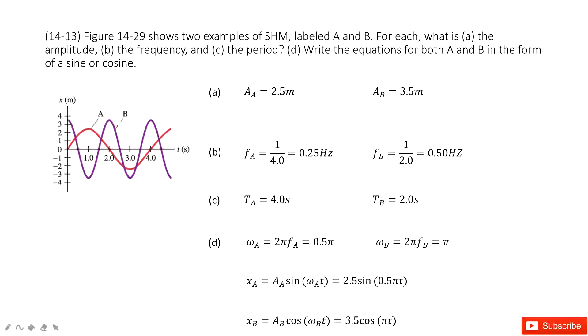In this picture it shows two examples about simple harmonic motions A and B. First we need to find the amplitude for A and B. For amplitude A we look at this picture, 2.5. Look at picture B at this peak, 3.5.